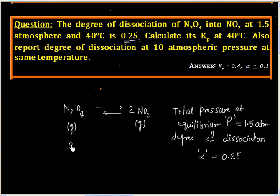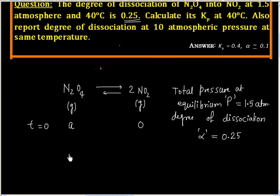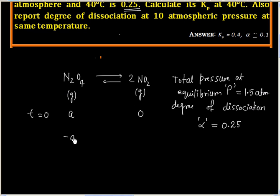Let us say initially we have A moles of N2O4 and 0 moles of NO2. If A moles of N2O4 dissociate, it will form 2A moles of NO2.